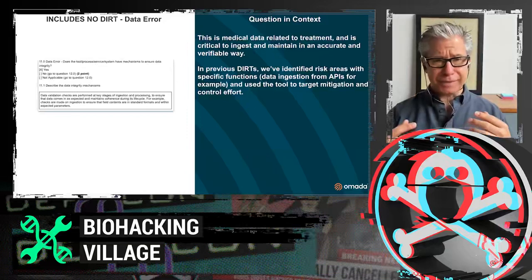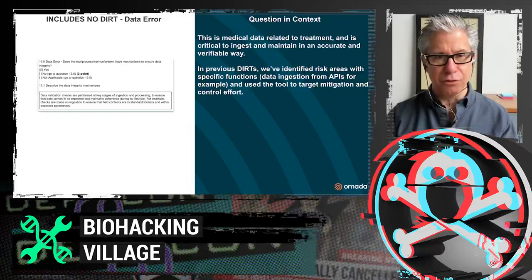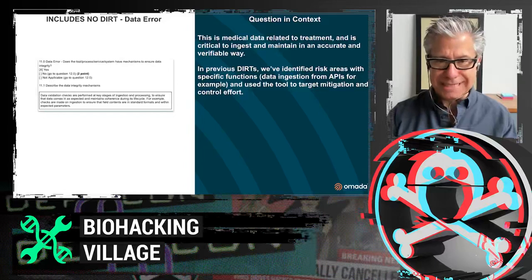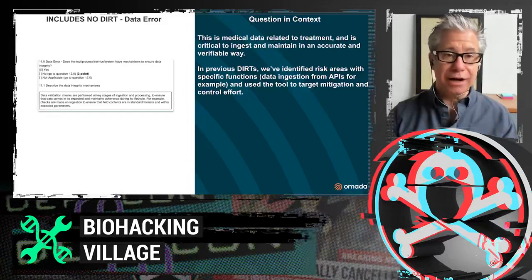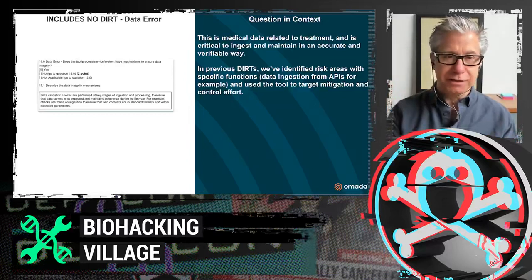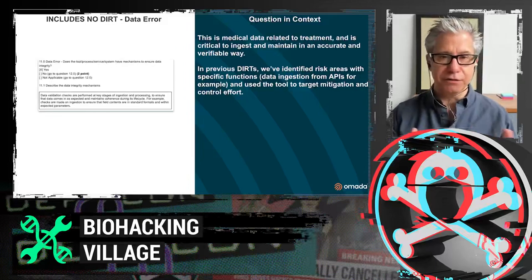Data error: here we dig heavily into data integrity. For a medical and clinical record-keeping process, we're essentially creating part of a medical record for glucose management for our participants. It's really important to make sure this is ingested and maintained accurately. In other Includes No Dirt models we've done, we've tested the APIs we use for data ingestion, so we can check that off — it's acting as intended — and focus the mitigation control work on other things.